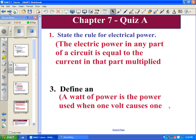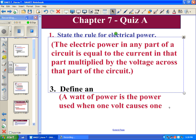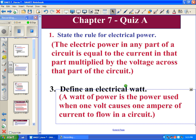State the rule for electric power. Electric power in any part of a circuit is equal to the current, and that part is multiplied times... You know what? We're missing part of the slide. Watch this. Across that part of the circuit. You see what I'm saying about this program screws up the formatting? So, part of our slide there disappeared. Define an electrical watt. A watt of power is the power used when one volt causes one amp of current to flow in a circuit. Volt times an amp.